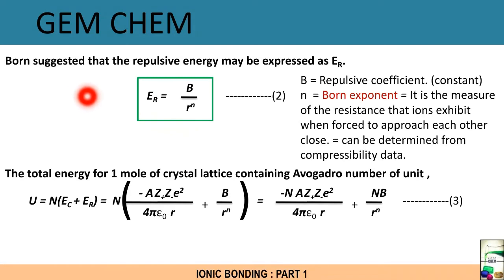Now we will deal with the repulsion term. Born suggested that the repulsive energy may be expressed as Er = B/rⁿ. Now B is a repulsive coefficient which is a constant, and n is a Born exponent. It is a measure of the resistance that ions exhibit when forced to approach each other close. There is a resistance when ions come closer, so the force which is required, the resistance which is generated, is known as n and it can be determined using the compressibility data.